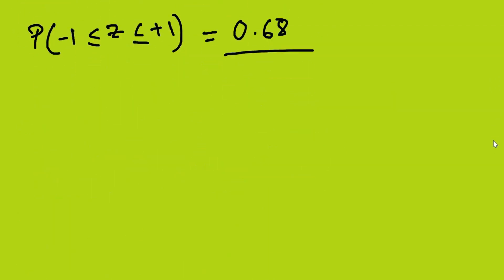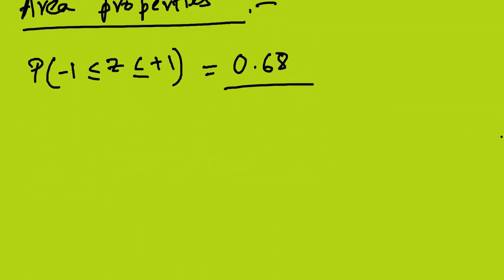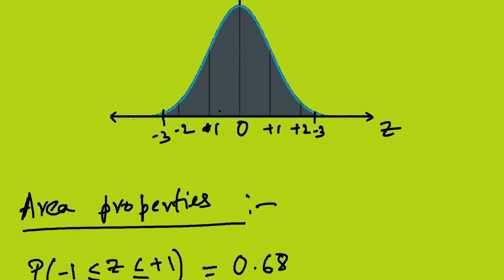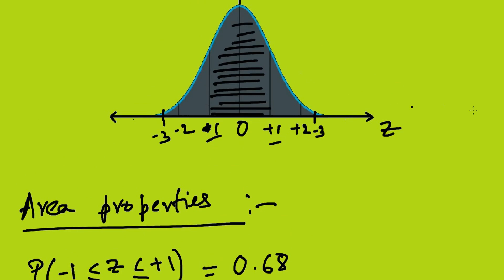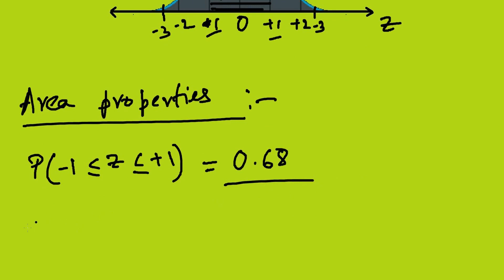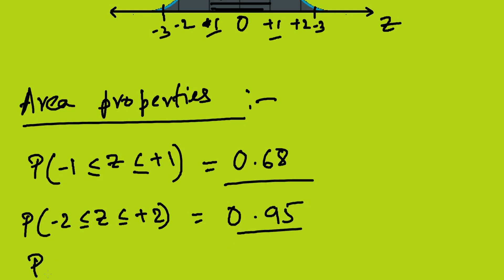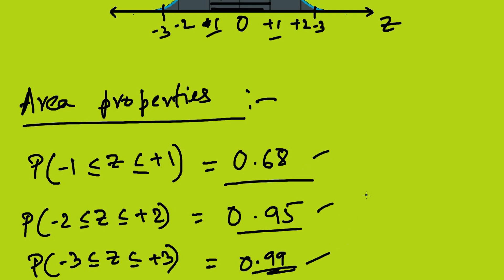This value 0.68 is obtained by integrating the standard normal PDF from −1 to +1, which gives the area in that region. Similarly, integrating from −2 to +2 gives 0.95, and from −3 to +3 gives 0.99. These three values are standard and should be memorized to solve standard problems.